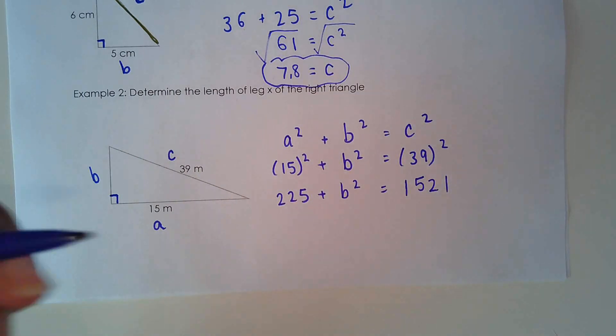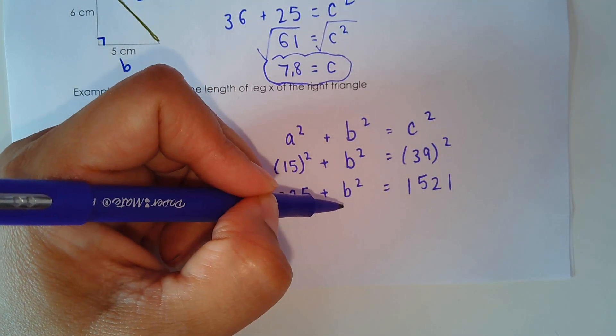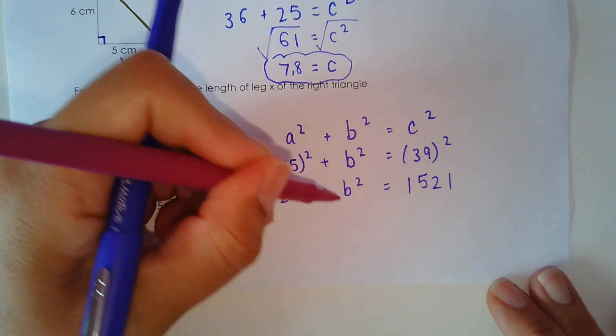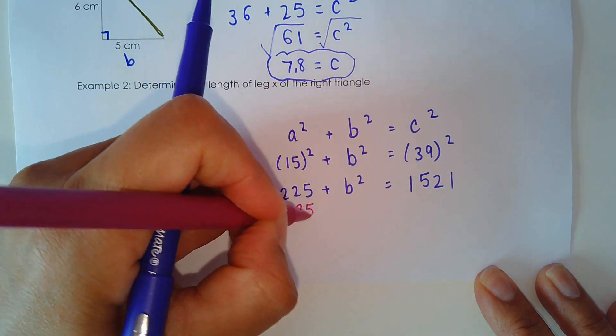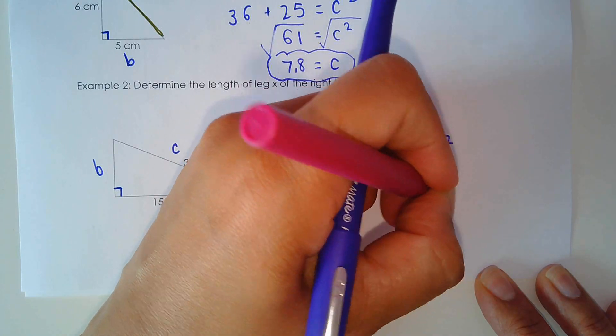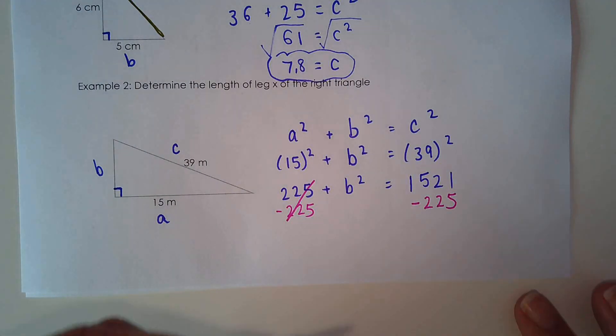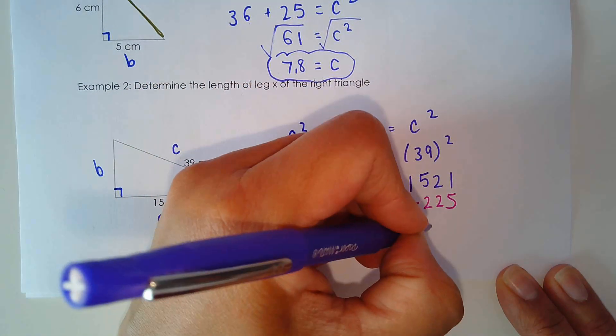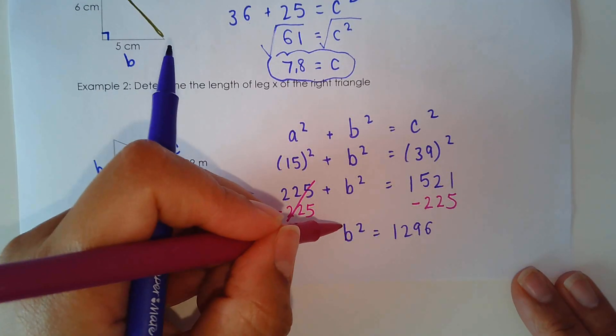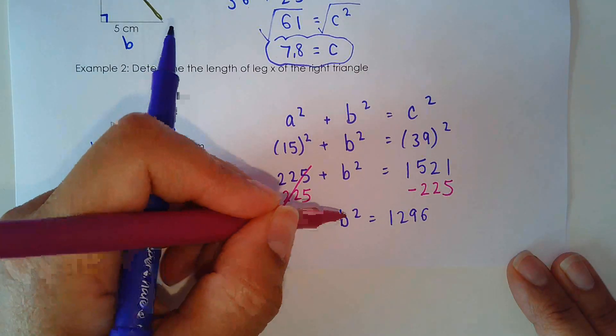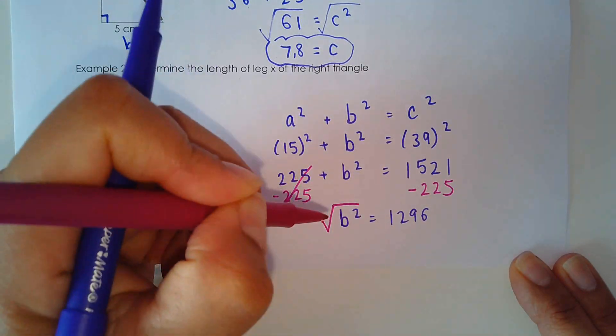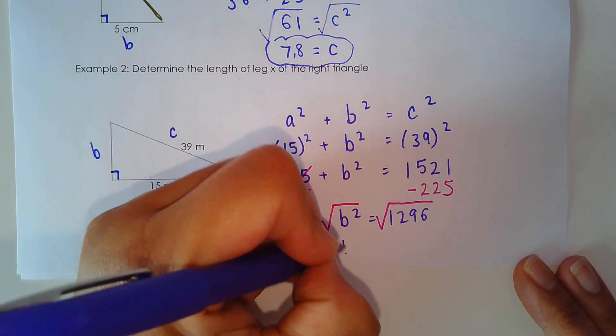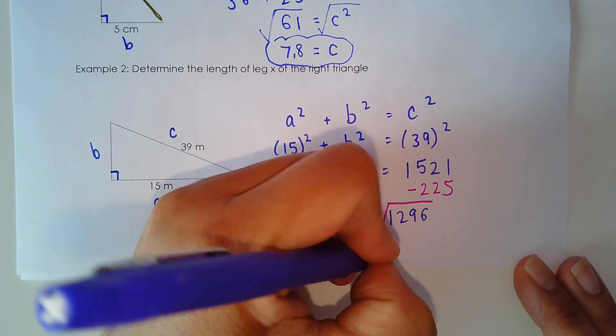And now I need to solve for B squared. So we need to go back into solving equations, which means I need to get this B squared by itself. So I would minus 225 and minus 225 from this side. So that I have B squared equals 1,296. And I don't want B squared. I just want B. So I take the square root of this side and the square root of this value. And I end up with B equals 36 meters.